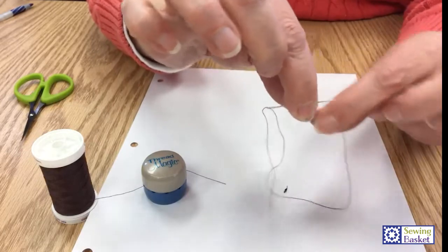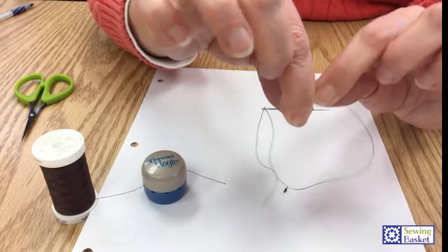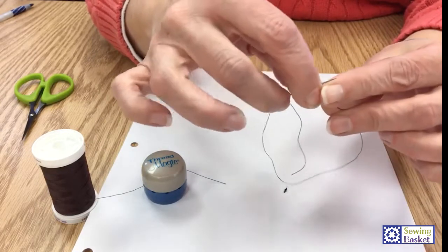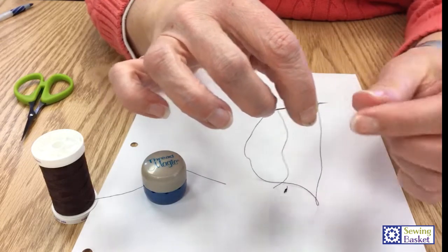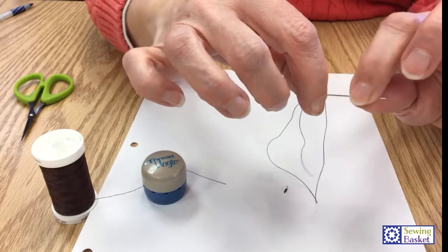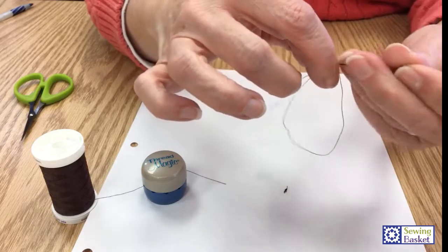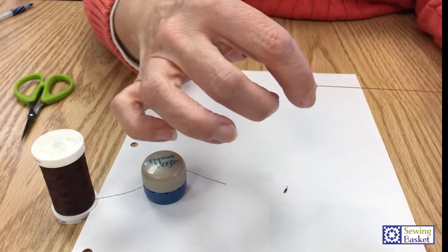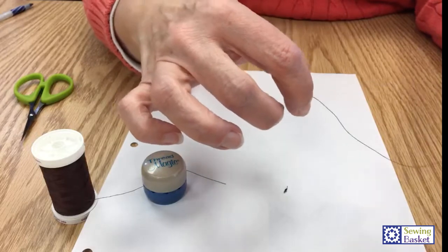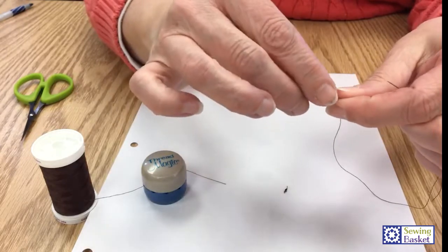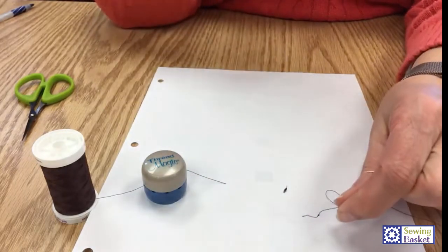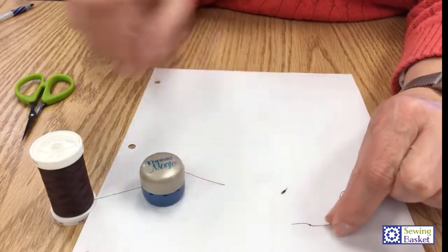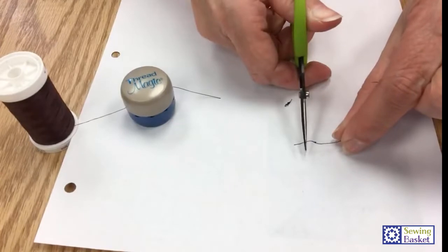Then I'm going to wrap my thread around three times and hold that little group of circles with this finger. I'm going to pull my thread, so I'm pulling my needle and my thread through those three little loops that I made, and that's going to give me a nice tight little knot right at the end of my string. You can clip it a little shorter if you need to.